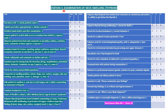Station 3 involves the examination of the neck in a standardized patient or mannequin. These are the various steps that must be taken in examining a patient with thyroid swelling. First is the general introduction: explain the procedure, sterilize the hands, and ensure the patient is seated, preferably on a chair, with access to examine from behind.